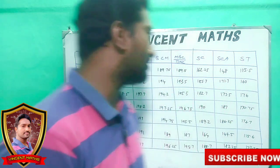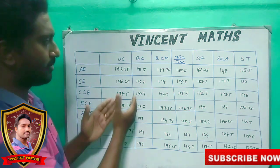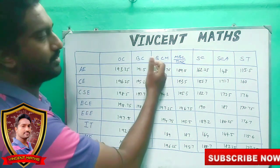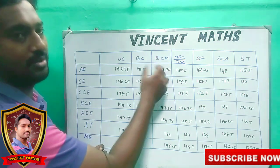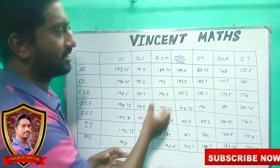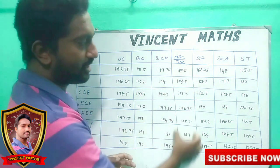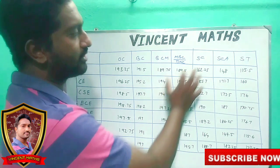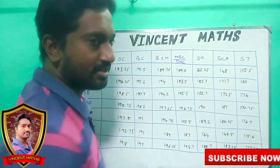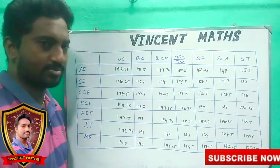Now look, I'm going to go caste-wise. The categories are: OC, BC, BCM, MBC, DNC — those are the same category group. Then SC, SCA, and ST. Those are the categories.